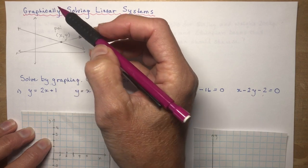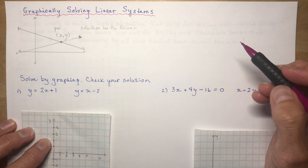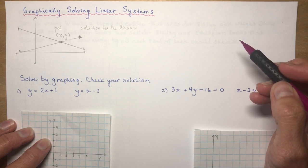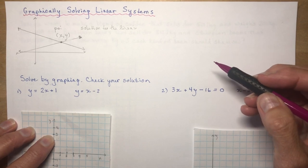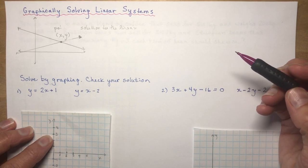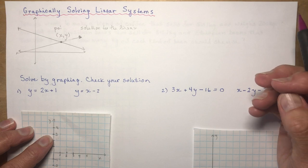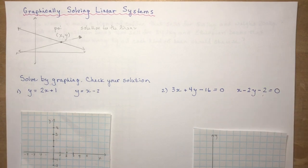Graphically means you're going to graph them. In order to graph them as accurately as possible so that you can get an answer you can actually see — graphically is probably the most unreliable method unless you have extremely good graphing skills. Because obviously not every answer is going to be like 1, 2. It could be 1.375 or something like that, in which case it's really hard to determine that from a graph.